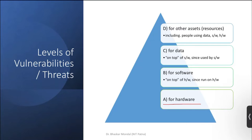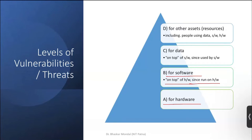The second level is software. Since software runs on hardware, attackers can target software. If software has bugs — as we've seen historically with many operating systems — those bugs can be exploited. There was a mess of software vulnerabilities that people exploited.